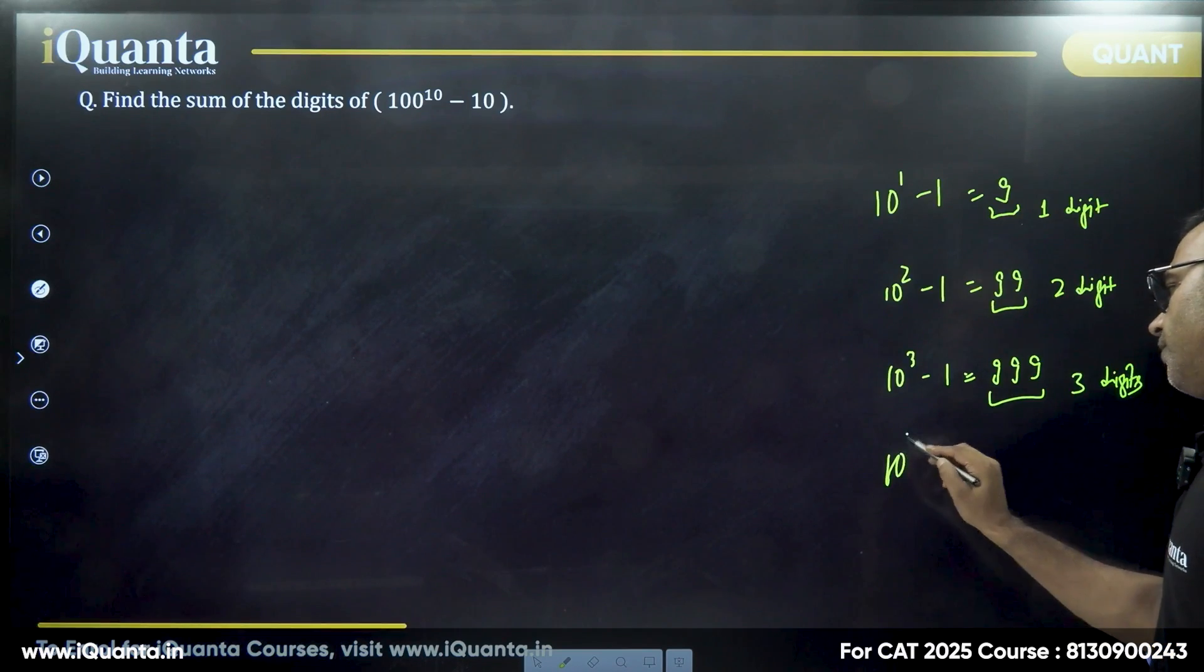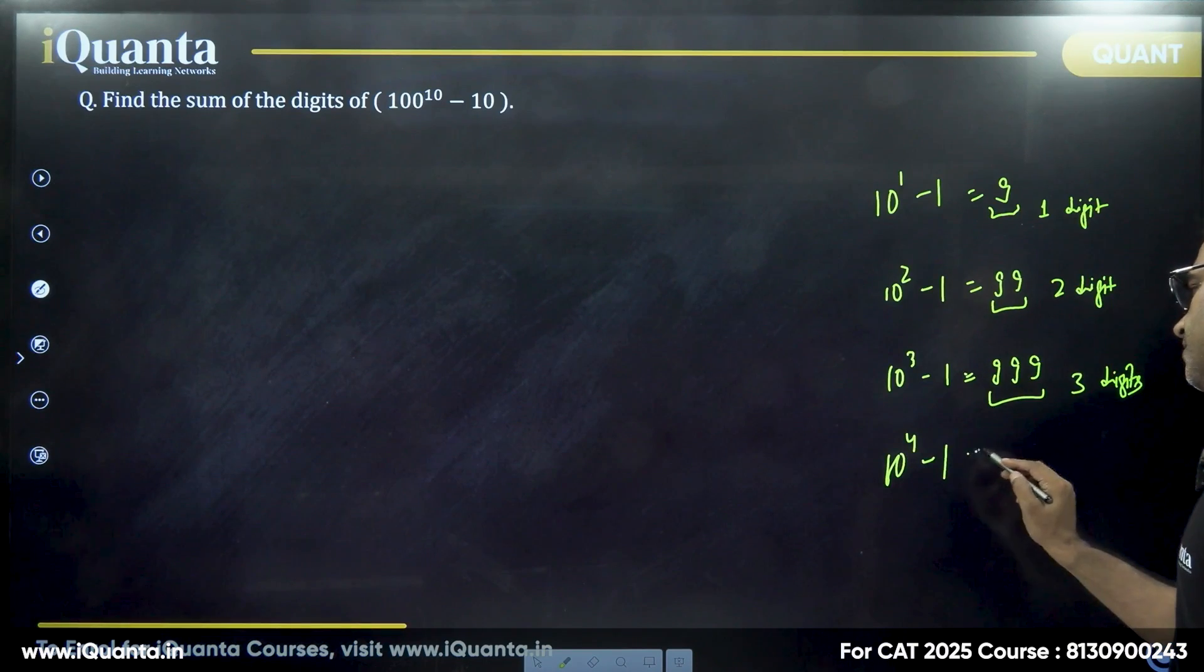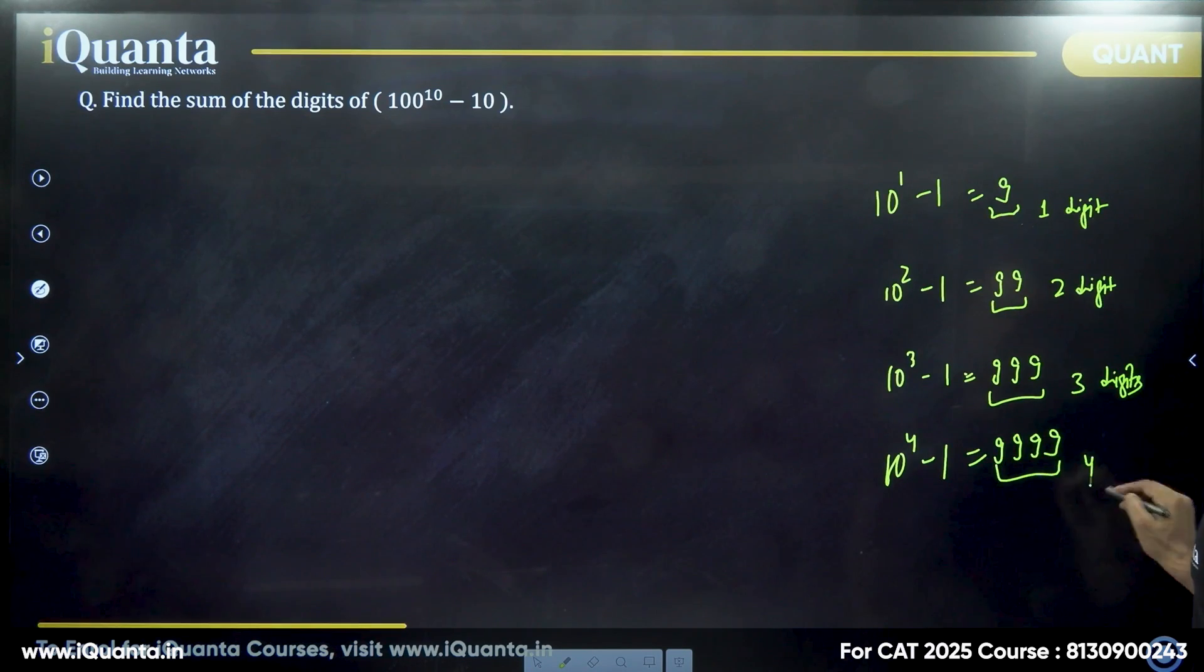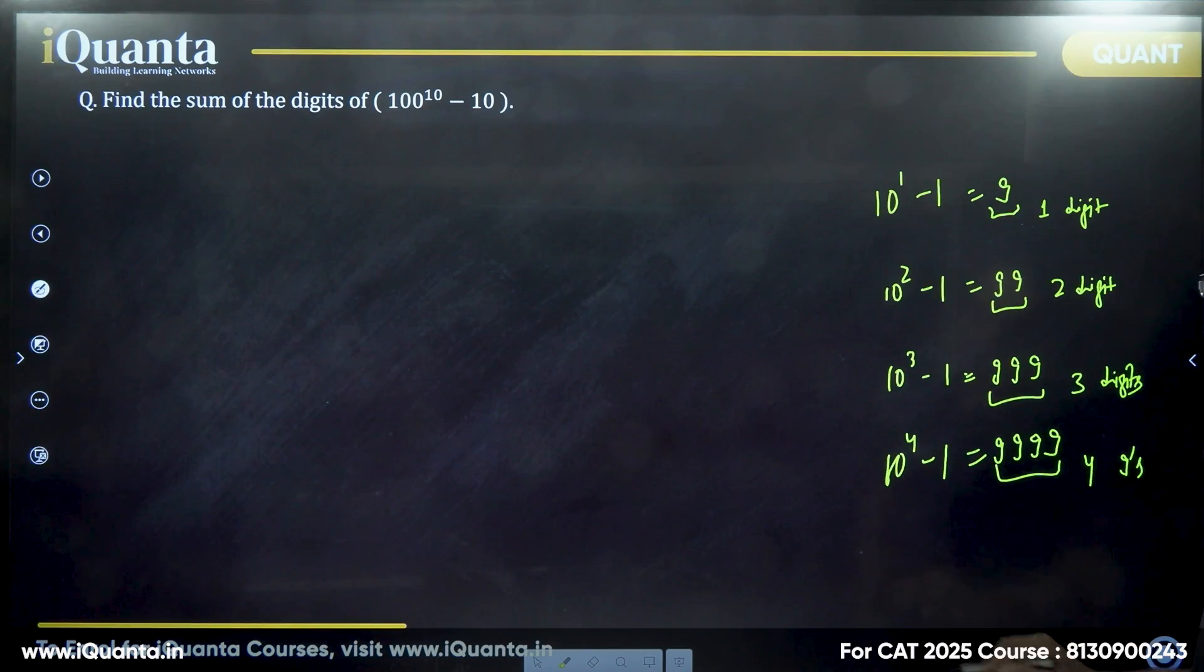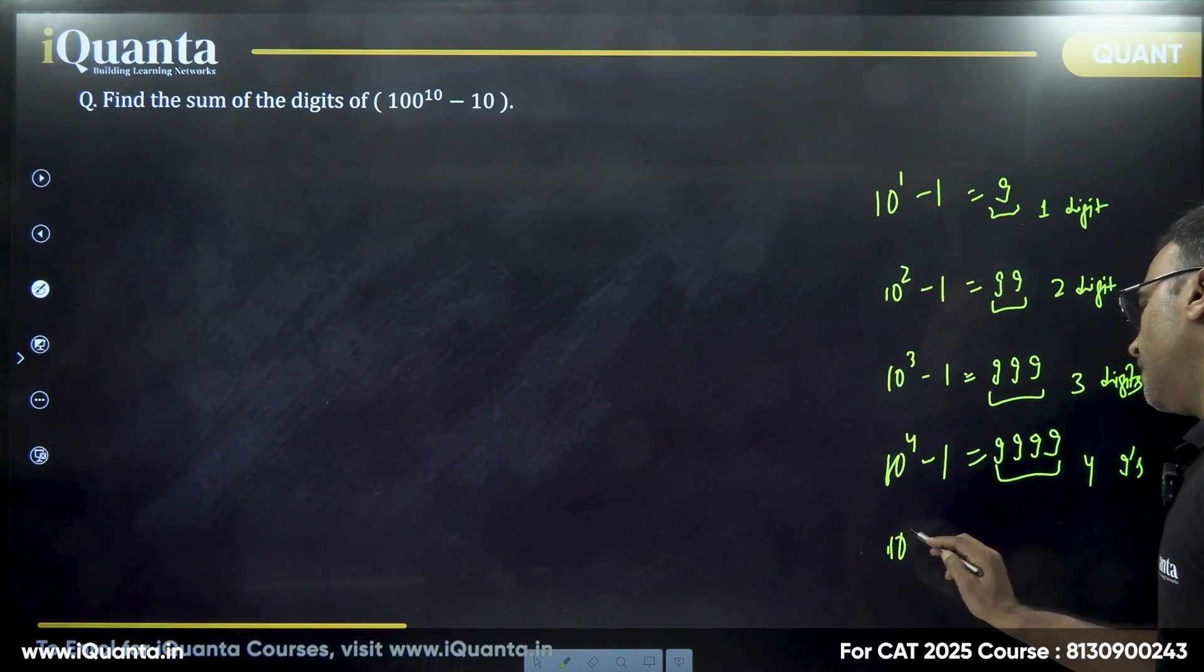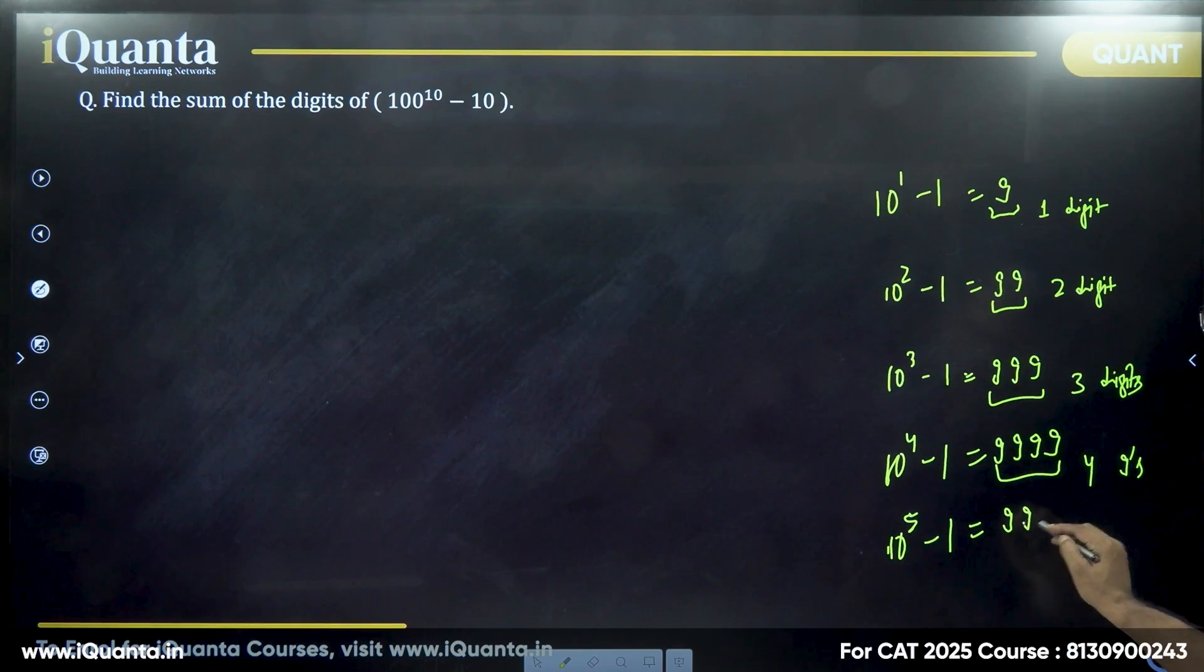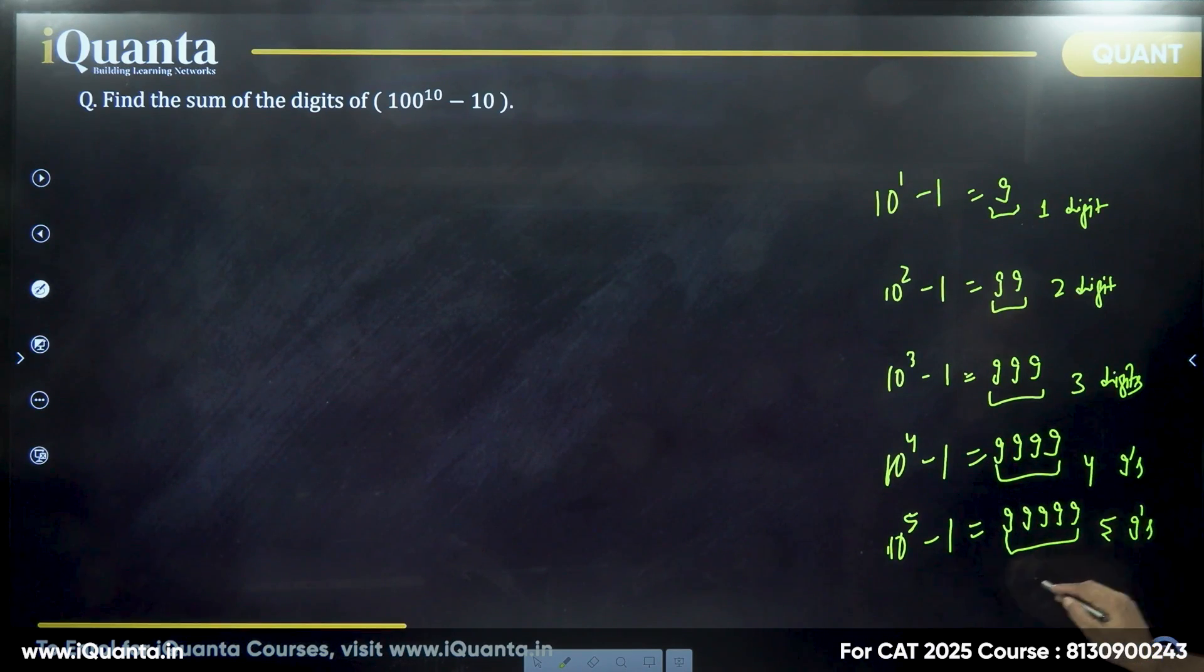If it is 10 to the power 4 minus 1, 10,000 minus 1, that is 9999. So there are four nines. If it is 10 to the power 5 minus 1, I know it is 99999, 5 times 9 and so on.